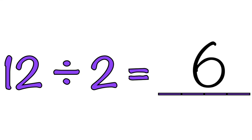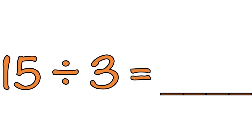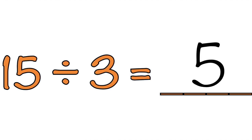Why is 12 divided by 2 equal to 6? Let's skip count by 2 until we reach 12 — 2, 4, 6, 8, 10, 12. That is 6. Next: 15 divided by 3 equals blank. The answer is 5! Let's skip count by 3 until we reach 15 — 3, 6, 9, 12, 15. That is 5.